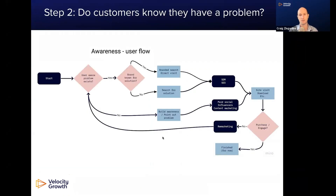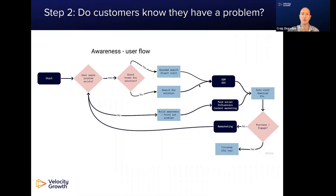The next thing I like to think about is intentionality. Does your potential user or customer know that they've got a problem that you have a solution for or not? If the user is aware that a problem exists, they're going to go and search for a solution. The channels that are going to likely be great fits for you early on will be things like search engine marketing and SEO, because SEM and SEO are made for a high-intent audience that's searching for a solution to a problem.